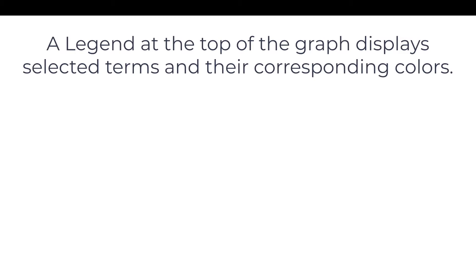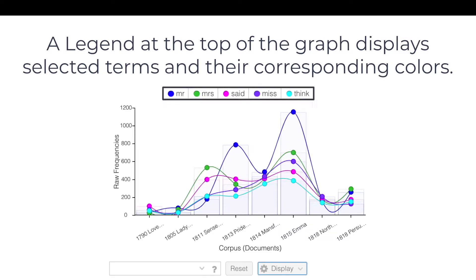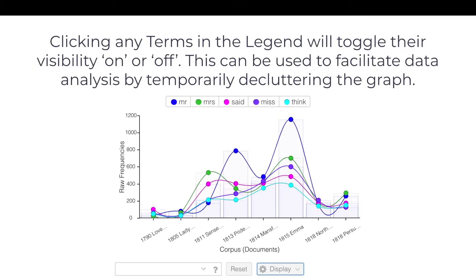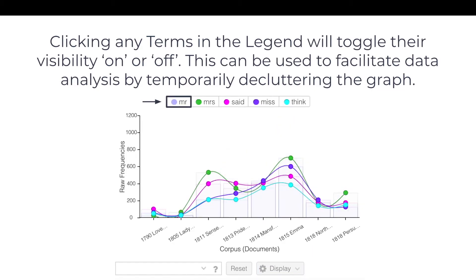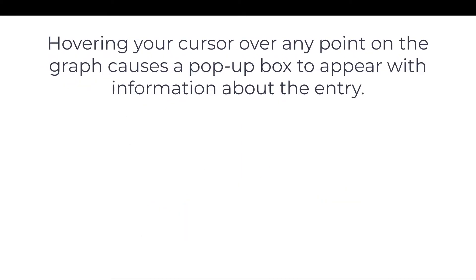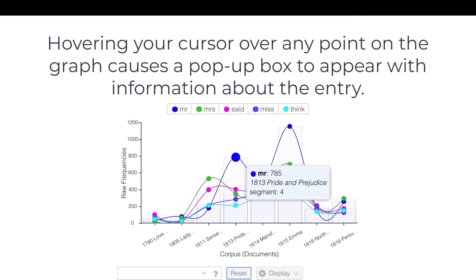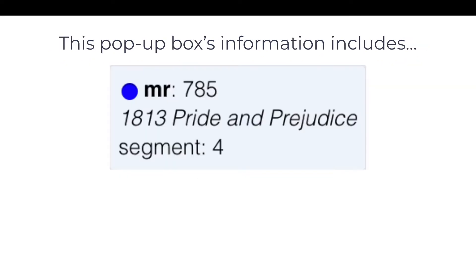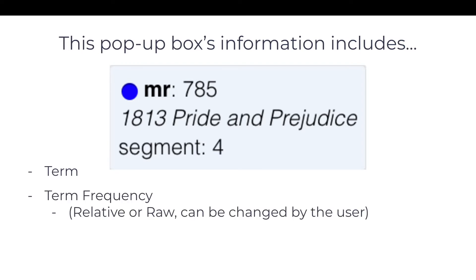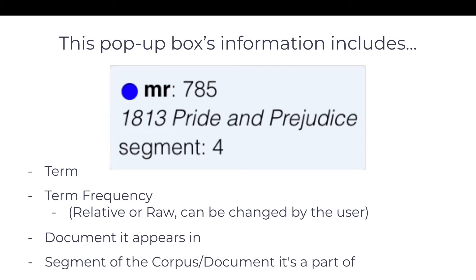A legend at the top of the graph displays selected terms and their corresponding colors. Clicking any term in the legend will toggle its visibility on or off, which can be used to facilitate data analysis by temporarily decluttering the graph. Hovering your cursor over any point on the graph causes a pop-up box to appear with information including the term, term frequency (relative or raw), the document it appears in, and the segment of the corpus or document it's a part of.